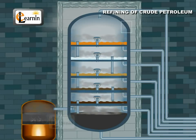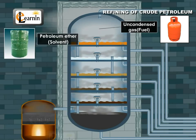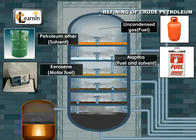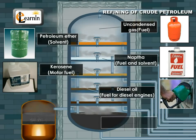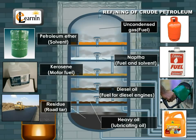After fractionation, the principal products obtained are: uncondensed gas, used as fuel; petroleum ether, used as solvent; naphtha, used as fuel and solvent; kerosene, used as motor fuel; diesel oil, fuel for diesel engines; heavy oil, used as lubricating oil; and the residue, used as road tar.